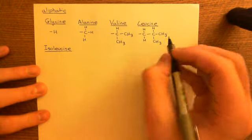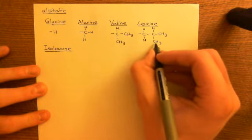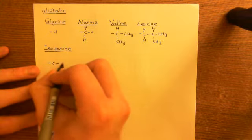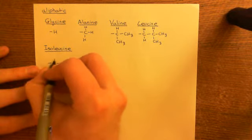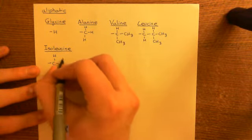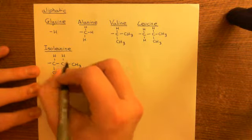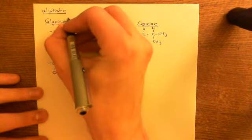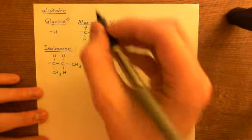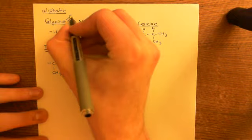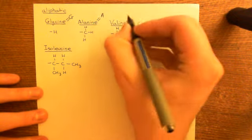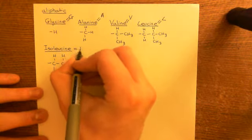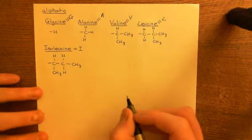And then finally there's another common example of an aliphatic amino acid which is isoleucine. Isoleucine is an isomer of leucine — what we're going to do is swap around one of the hydrogens on the first carbon for one of the methyl groups on the second carbon. The R group of isoleucine will have a methyl group off the first carbon, then a hydrogen, then two hydrogens off the second carbon, and then a methyl group off it. Just to give the single letter amino acid codes: glycine is G, alanine is A, valine is V, leucine is L, and isoleucine is I.